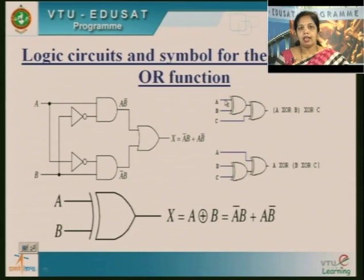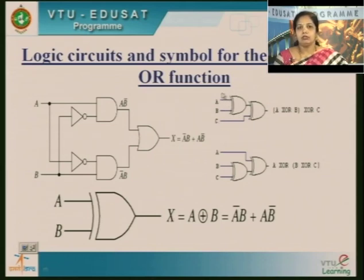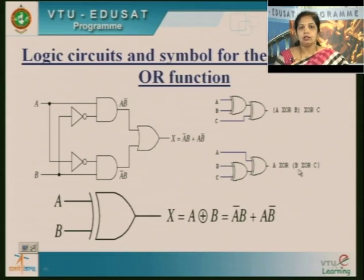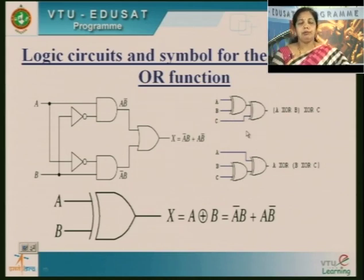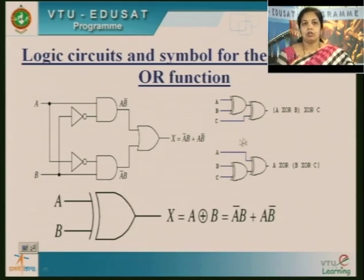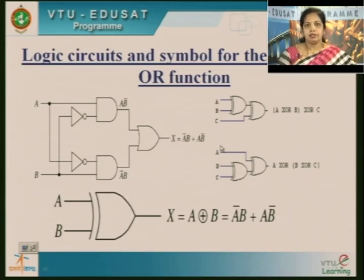Similarly, we may have more than two inputs. A XOR B can be XORed with another input, forming A XOR B, then XORed again with C. Similarly, we can XOR B and C and then XOR with A. We can generate multiple-input XOR combinations — it need not be only two inputs. We can have many-input XOR gates.